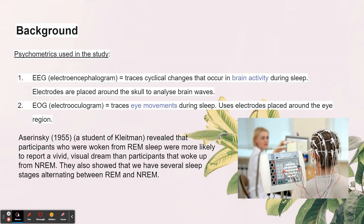There are psychometrics used in the study: EEG and EOG. As you can see in the picture, electrodes are placed around the skull to analyze brain activity — which parts of the brain are active, the brain waves. In this study, EEG is used during sleep to see what happens inside our brain when we are sleeping.